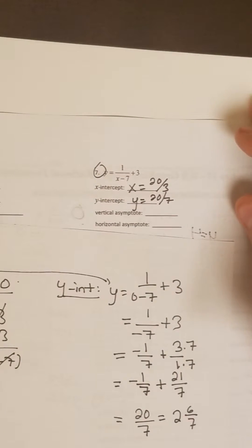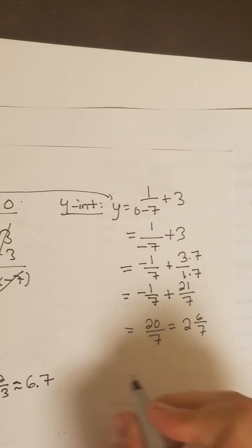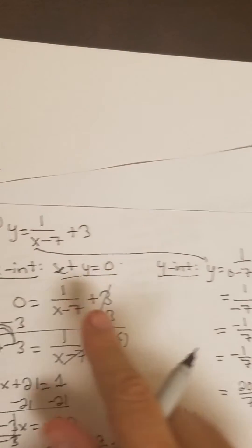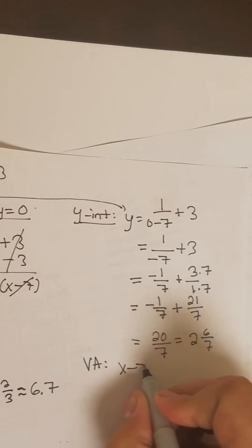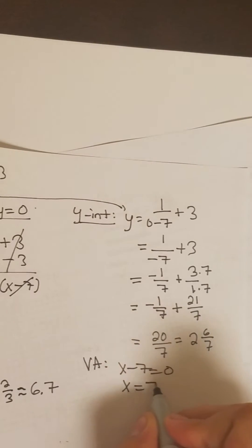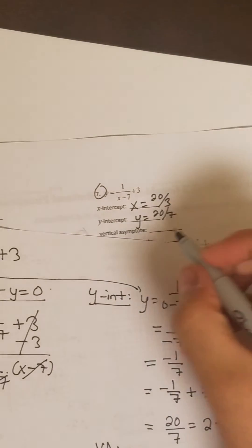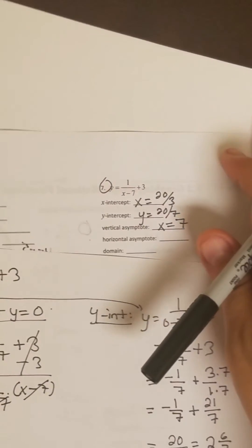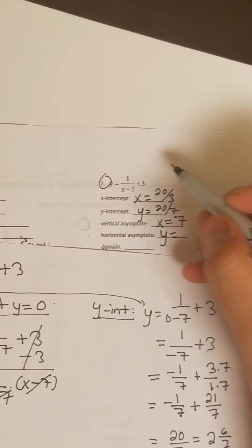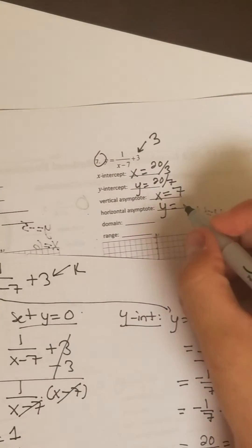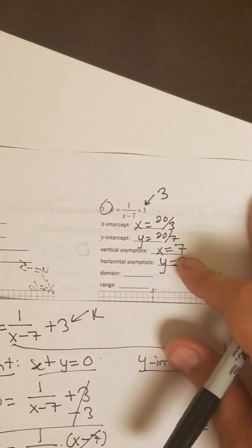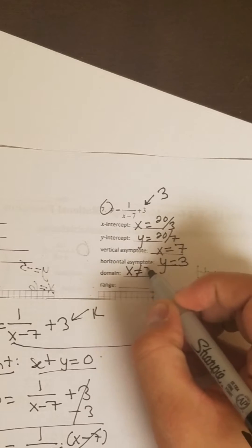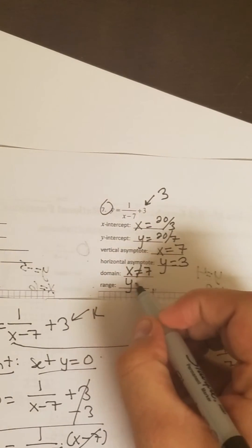Alright, now let's look at the vertical asymptote — set the denominator to 0. Our denominator here is x minus 7, so we set that to 0. Add 7 to both sides and you get x equals 7 — that is our vertical asymptote. For horizontal, you use your k value — the k value is 3, so y equals 3. Domain: x cannot equal 7. Range: y cannot equal 3.